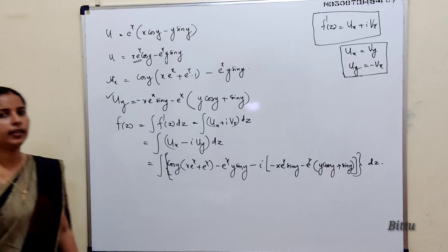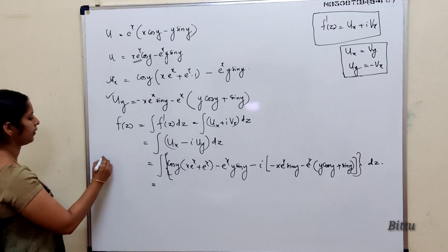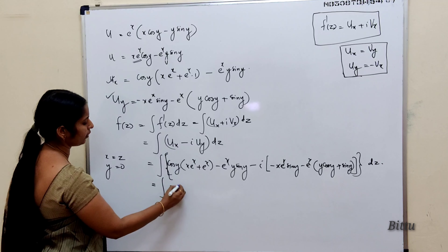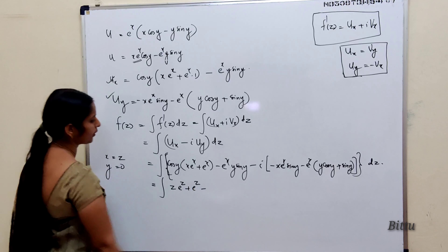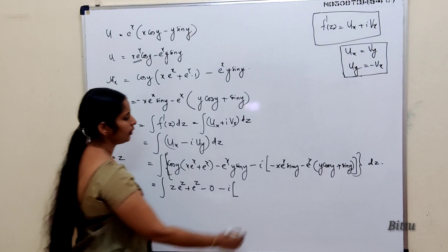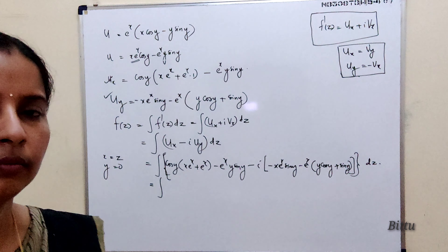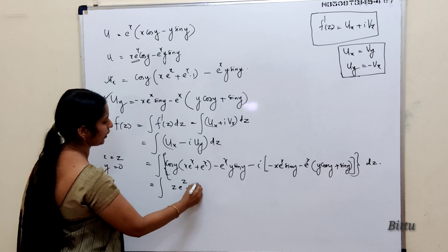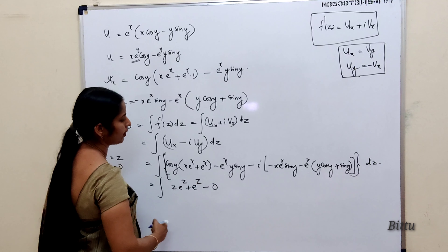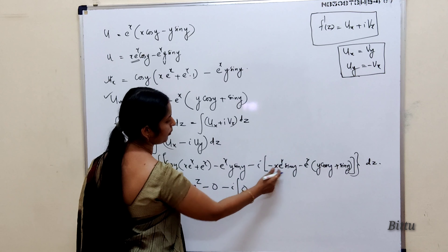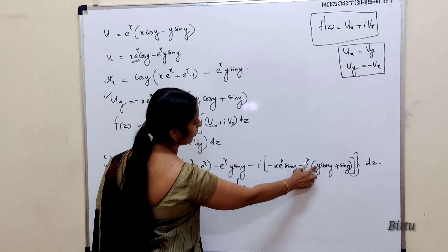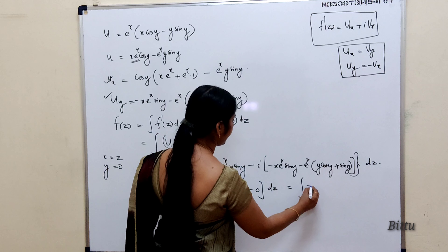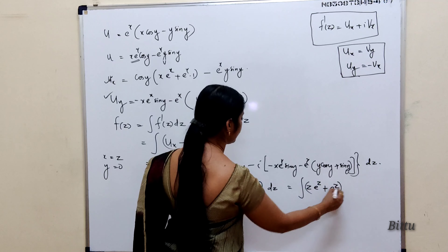Next, put x = z and y = 0. When y = 0, cos(0) = 1, so the first part of u_x becomes z·e^z + e^z. The sin(y) = 0 terms vanish. For the u_y terms: sin(0) = 0 makes those terms zero; cos(0) = 1, but sin(0) = 0 makes remaining terms zero as well. So the integrand simplifies to (z·e^z + e^z + e^z) dz = (z·e^z + 2e^z) — wait, simplifying carefully: integral of (z·e^z + e^z) dz.